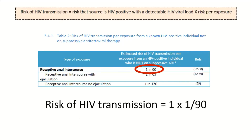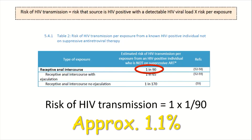Therefore the risk of HIV transmission is 1 — which is the risk that the source is HIV positive with a detectable viral load, as we already know that B is HIV positive and not on any treatment — multiplied by the risk per exposure of 1 in 90, as shown in this table. That is approximately 1.1%.